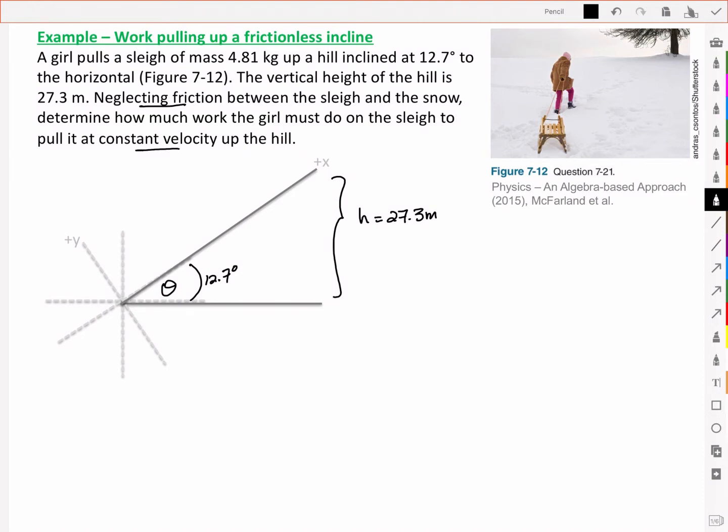Constant velocity means no net force, so all the forces are balancing out, but that doesn't mean that the girl isn't doing work. She's applying a force in order to pull it at a constant velocity, overcoming the force due to gravity.